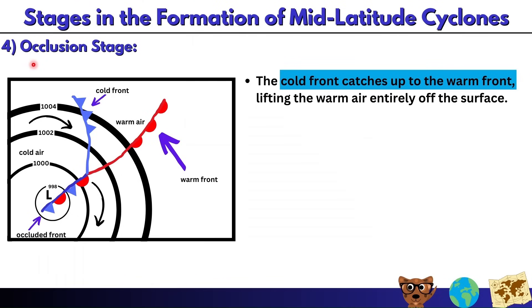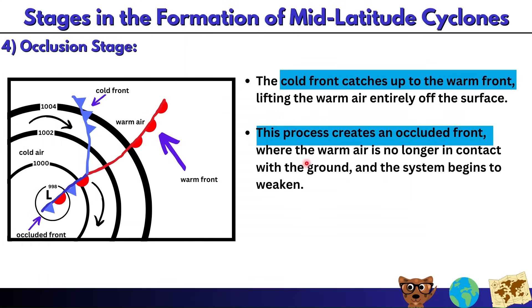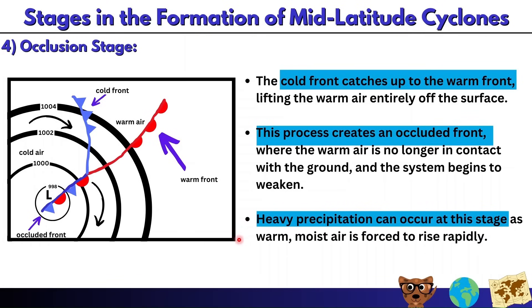Stage four is the occlusion stage, coming towards the end of the cyclone's life. An occluded front forms because the cold front has caught up to the warm front — the lowest pressure in the center is now 998 millibars. The cold front's denser, faster-moving cold air lifts the warm air entirely off the surface. This creates an occluded front, shown by both triangles and semi-circles, and the system begins to weaken. Heavy precipitation can occur as warm moist air is forced to rise rapidly.